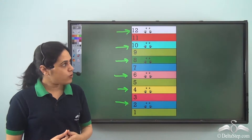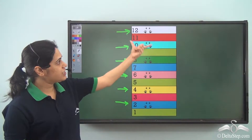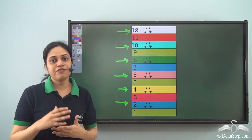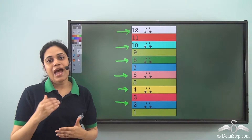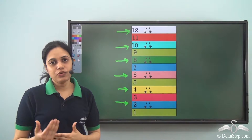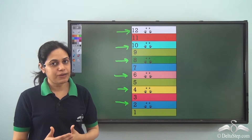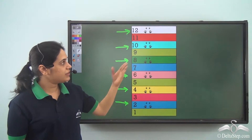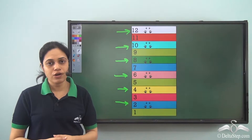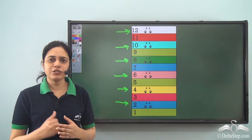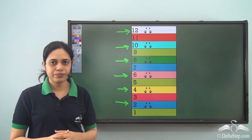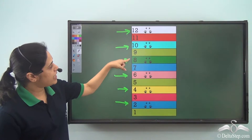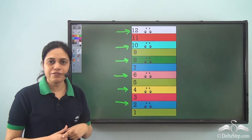Now suppose that this track was extended further. Can you tell me the track number on which we will find the footprints of the frog? Will you be able to tell me? See: 2, 4, 6, 8, 10, 12.